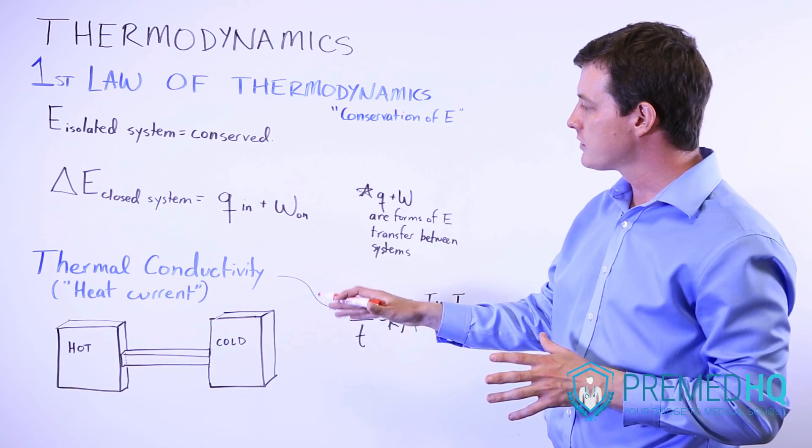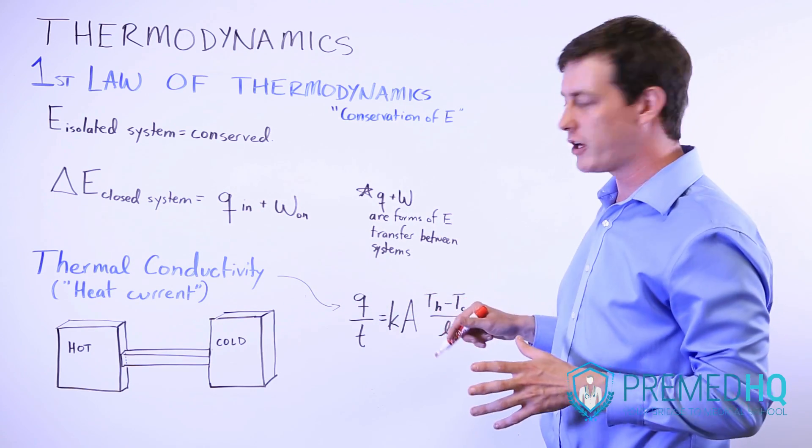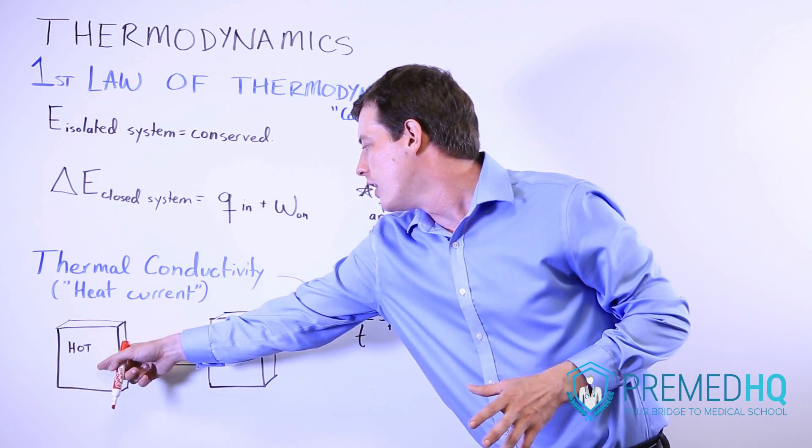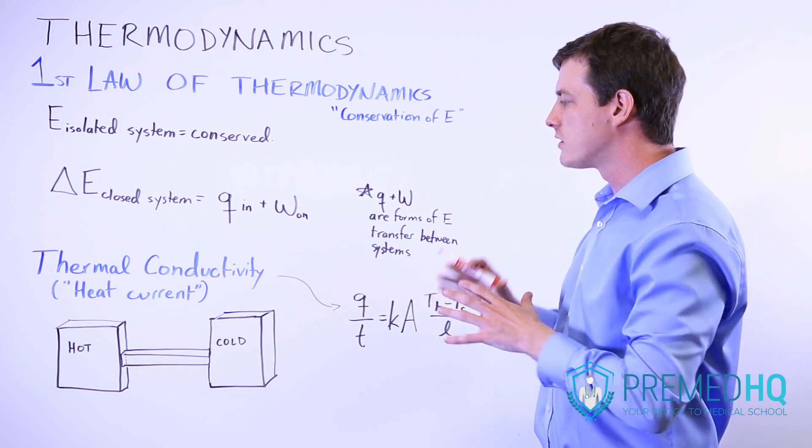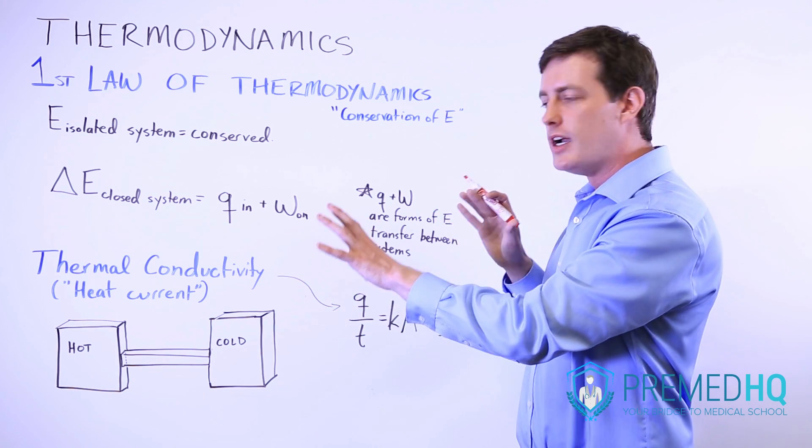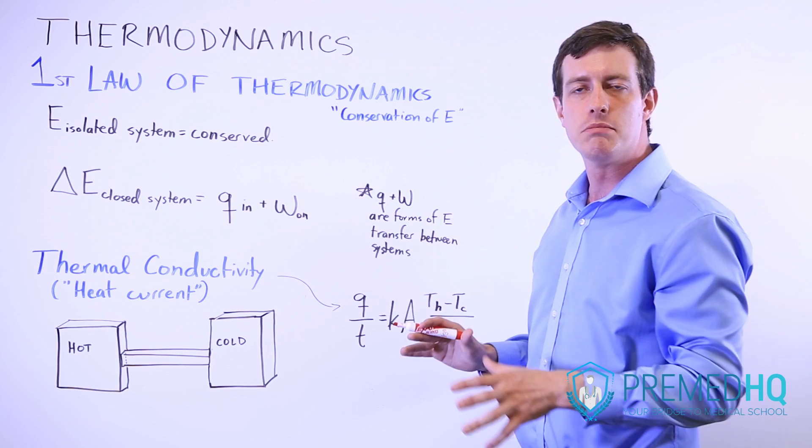And then what else creates the transfer of heat is the difference or the temperature gradient between the temperature of the hot reservoir and the temperature of the cold reservoir. So if there's a big difference in temperature, then that is going to create a greater transfer of heat per unit of time.